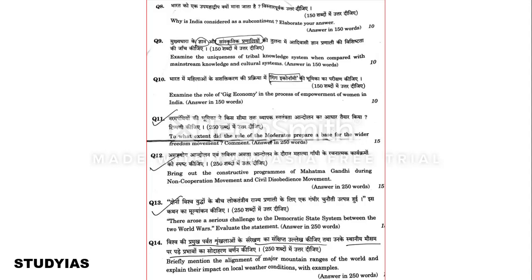Question eleven: To what extent did the role of the Moderates prepare a base for the wider freedom movement? This is a question from Modern Indian History. Question twelve: Bring out the constructive program of Mahatma Gandhi during the Non-Cooperation Movement and Civil Disobedience Movement. These are direct questions from Modern Indian History — if you have read the books, writing a perfect answer will be easy.